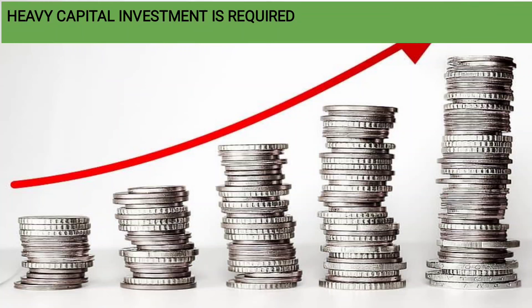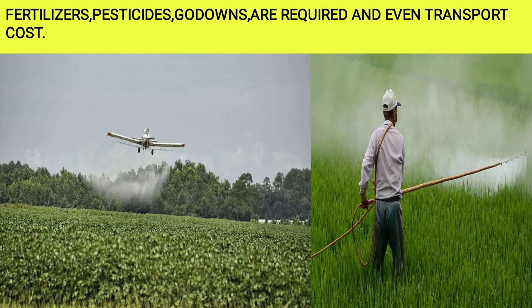Heavy capital investment is required for extensive cultivation. You will require a lot of money. Fertilizers, pesticides, go-downs for storage, and even transport costs are needed. It is a huge land of more than 200 hectares, so the crops require all these things, and transporting the food grains from one place to another adds to the cost.